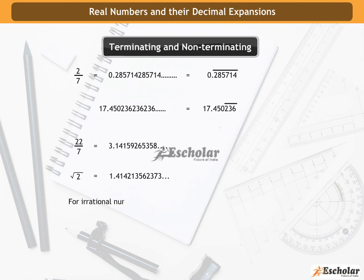For irrational numbers, the decimal expansion is non-terminating and non-repetitive.